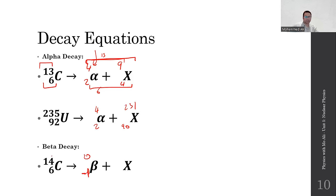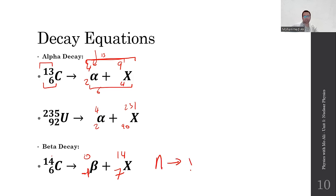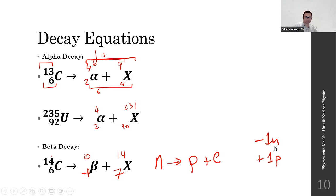In beta decay, the beta particle has notation 0 and −1. So for nitrogen-14, emitting a beta particle: 14 − 0 = 14, the mass number stays the same; and the proton number increases by 1 because a neutron changes into a proton, releasing an electron as the beta particle.